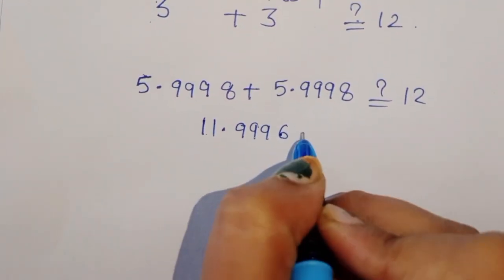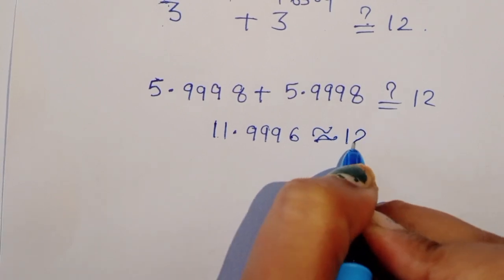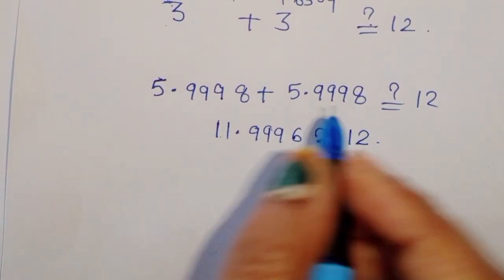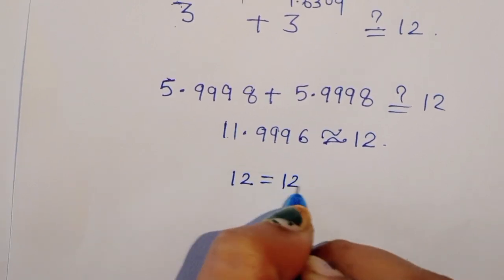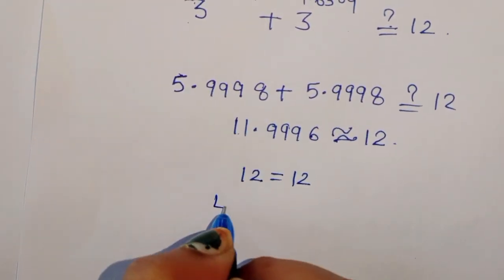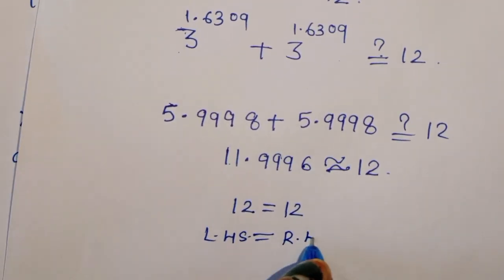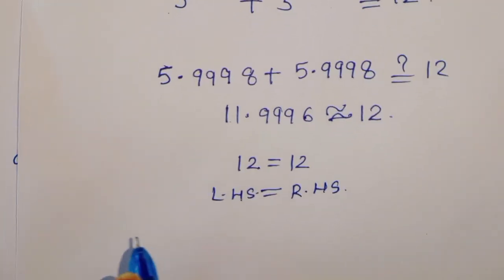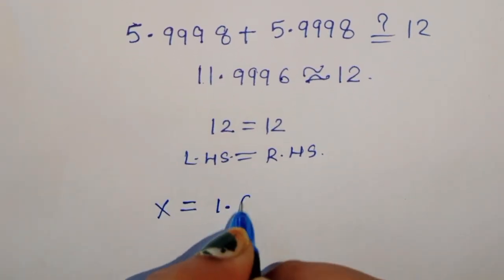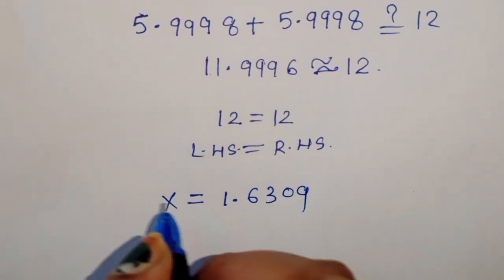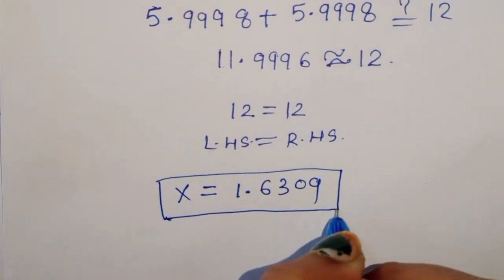And 11.9996 is the approximate value of 12. So we can say 12 is equal to 12, meaning LHS is equal to RHS. Therefore, the value of x is equal to 1.6309. This is the correct value and the correct solution.